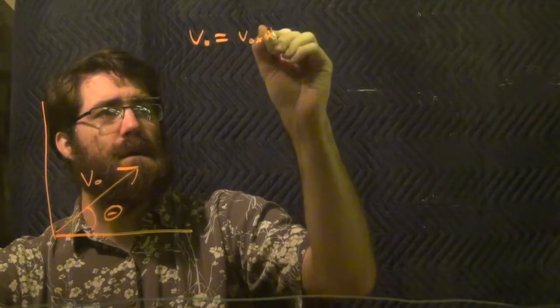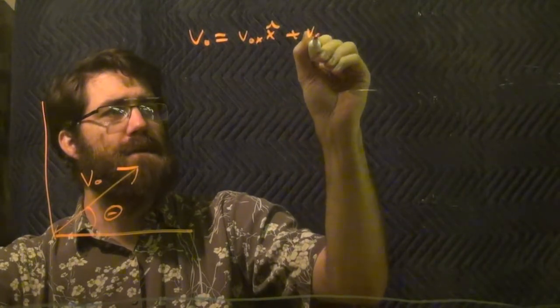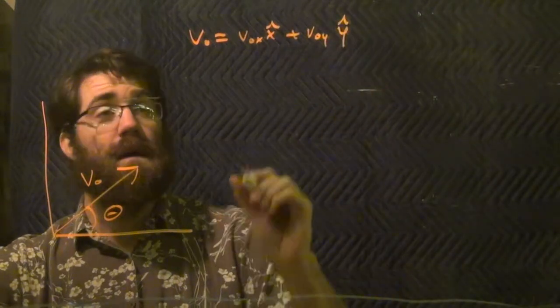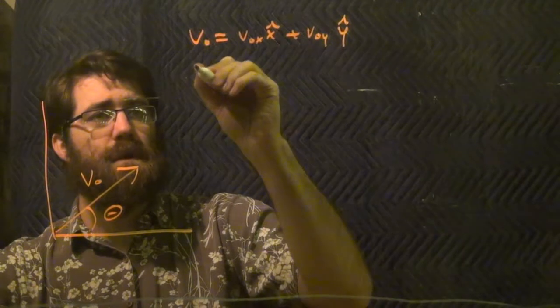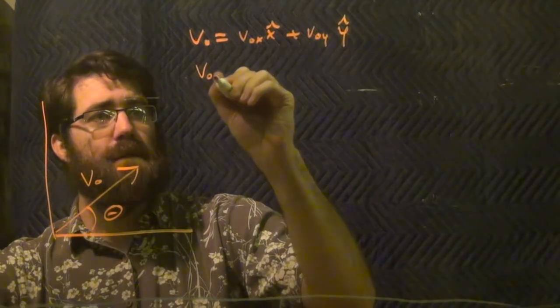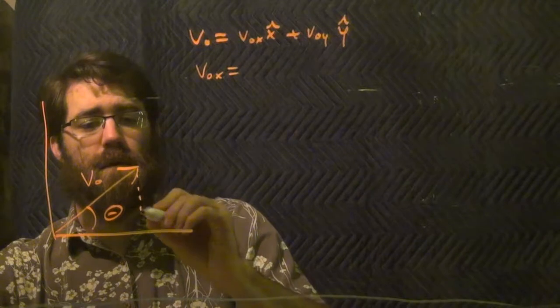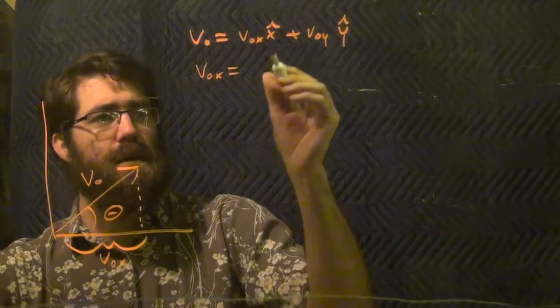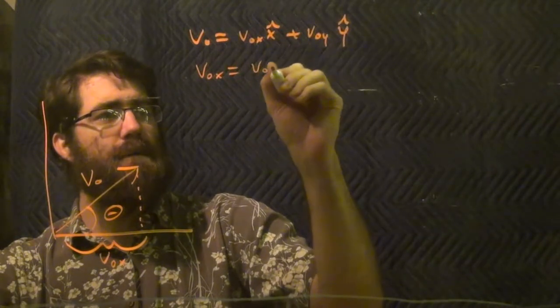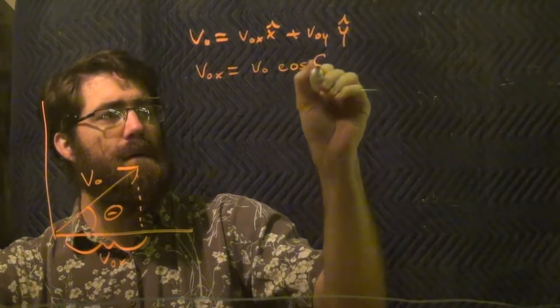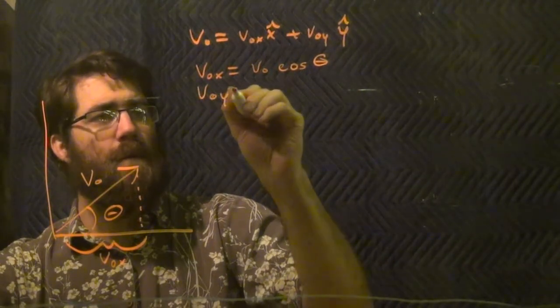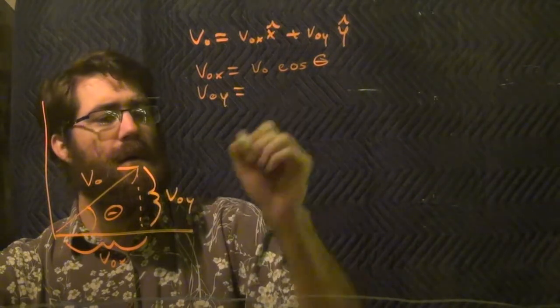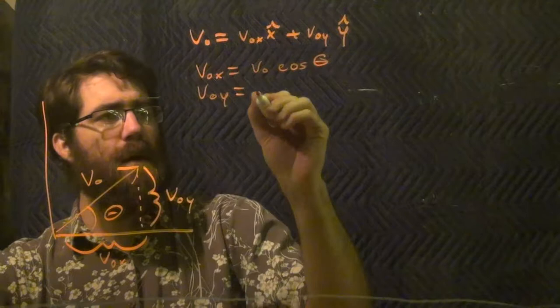A v-naught x x-hat plus a v-naught y y-hat. And these components can be given by individual trig functions. V-naught x is equal to this part, which is the cosine of that angle, v-naught cosine theta. And v-naught y is the sine times the hypotenuse, v-naught sine theta.